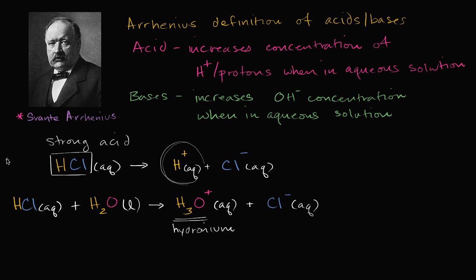Now what would be a strong base by the Arrhenius definition of acids and bases? One example would be sodium hydroxide. Sodium — Na — bonded to the hydroxide group, which is an oxygen bonded to a hydrogen. So that's sodium hydroxide.